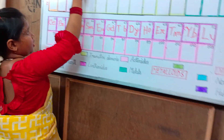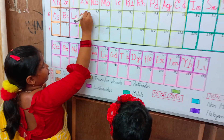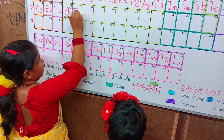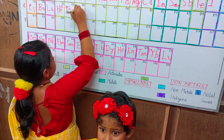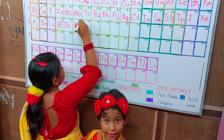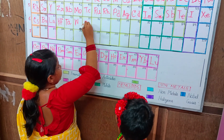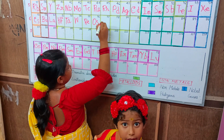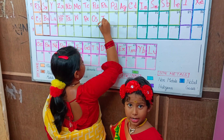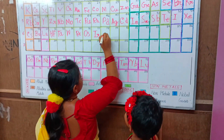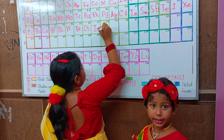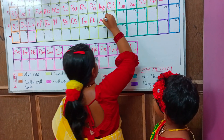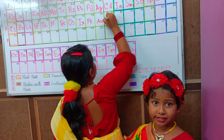72 hafnium, Hf. 73 tantalum, Ta. 74 tungsten, W. 75 rhenium, Re. 76 osmium, Os. 77 iridium, Ir. 78 platinum, Pt. 79 gold, Au. 80 mercury, Hg.